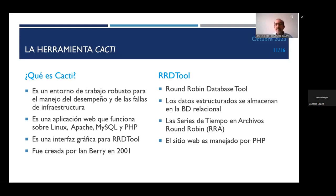¿Qué es RRDTool? RRDTool significa Round Robin Database Tool. Con esta aplicación se generan datos estructurados que se almacenan en una base de datos relacionada. Está basada en series de tiempo que se almacenan en archivos round robin: cada cierto periodo de tiempo el sistema colecta información de distintos dispositivos, los envía al servidor donde está instalado CACTI y ahí PHP los procesa para generar gráficas en un sitio web.